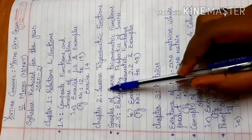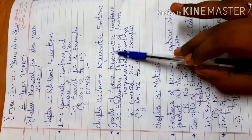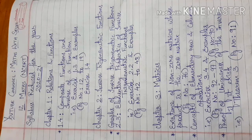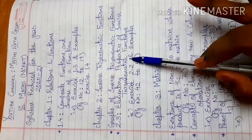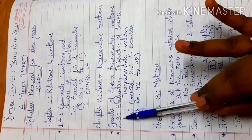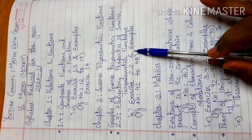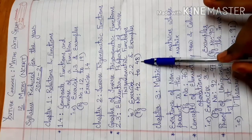Next one is Chapter 2, Inverse Trigonometric Functions. The deleted topic is Graphs of Inverse Trigonometric Functions — we will learn the graph of sine inverse and cosine inverse — that is not in this syllabus. And Elementary Properties of Inverse Trigonometric Functions, Topic 2.3, is also not in this topic. Exercise 2.2 and other related examples — that is page number 42 to 48.